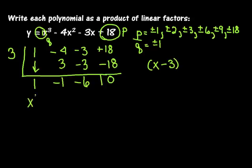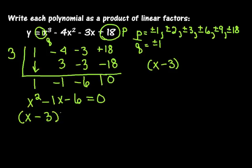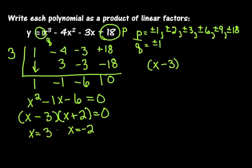The quotient is x squared minus 1x minus 6. I can factor that right away as x minus 3 times x plus 2, because negative 3 times 2 is negative 6 and negative 3 plus 2 is negative 1. So my other zeros are at 3 and negative 2. We already have a 3, so it's a double zero — multiplicity 2. So the polynomial written as a product of linear factors is x minus 3 times x minus 3 times x plus 2, which we set equal to y.